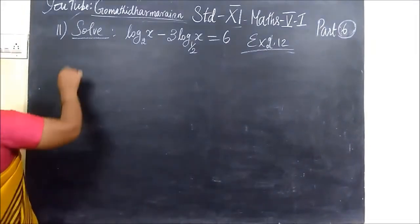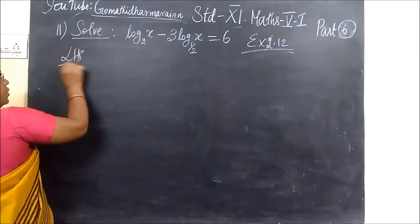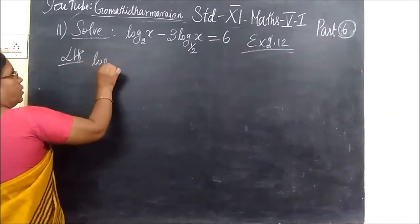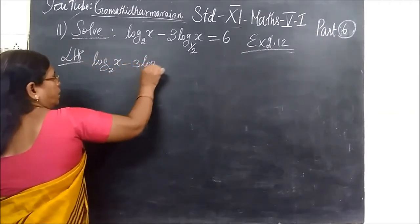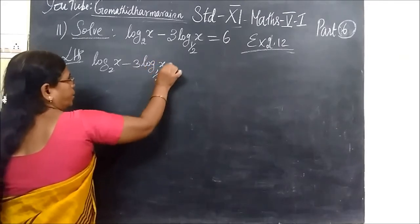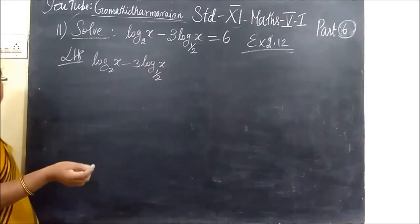Now, you take LHS. So, LHS get log x to the base 2 minus 3 log x to the base of. All this is the 6th number proof.